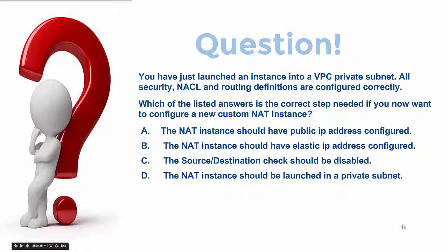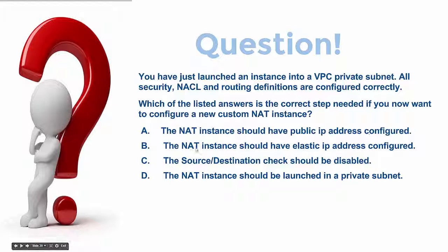Here's the sort of question they'll throw at you: you have just launched an instance into a VPC private subnet — all security, NACL, and routing definitions are configured correctly. Which of the following is the correct step needed if you now want to configure a new custom NAT instance? Options: the NAT instance should have a public IP address configured; the NAT instance should have an elastic IP address configured; the source destination check should be disabled; the NAT instance should be launched in a private subnet.